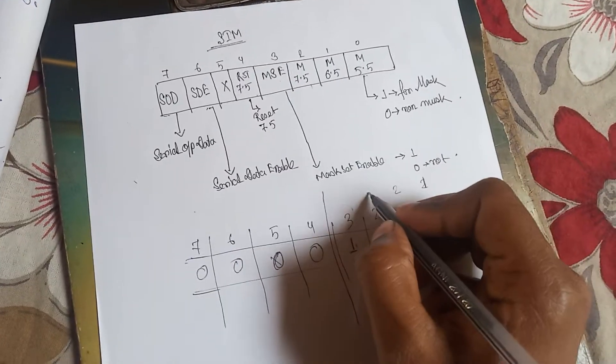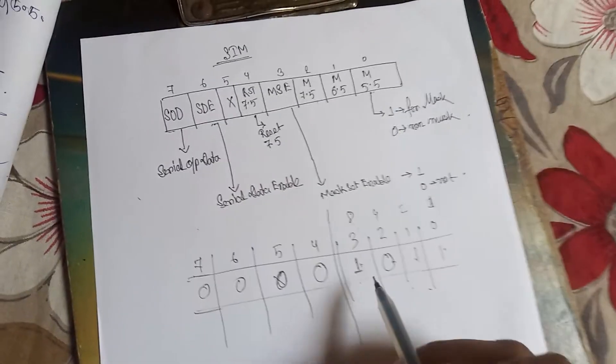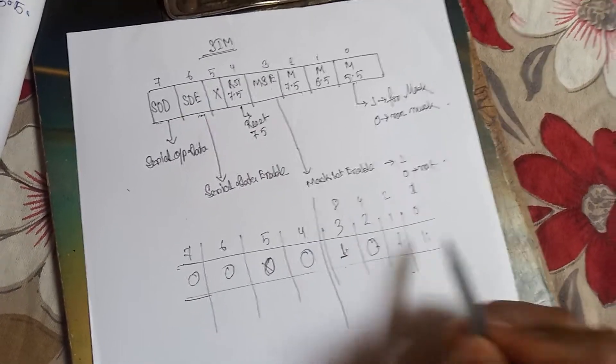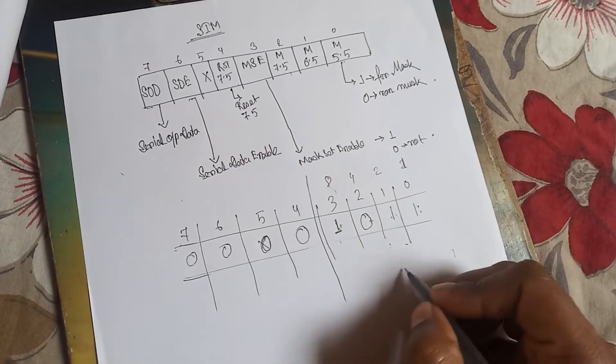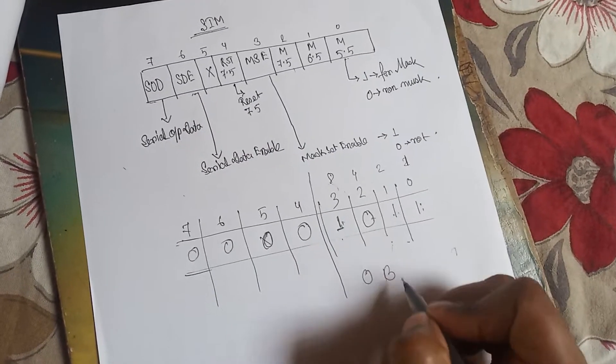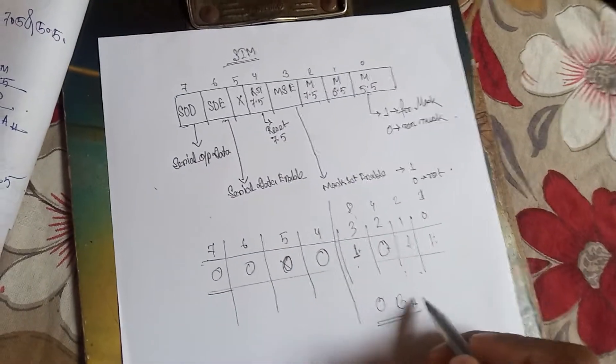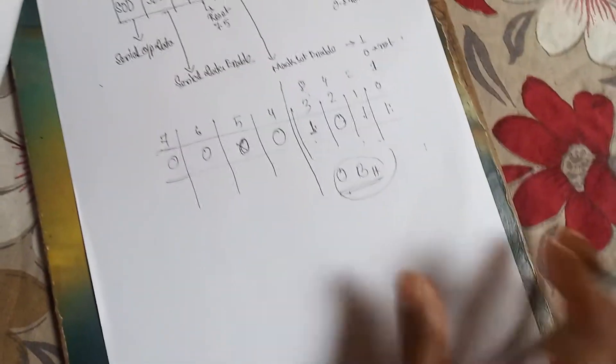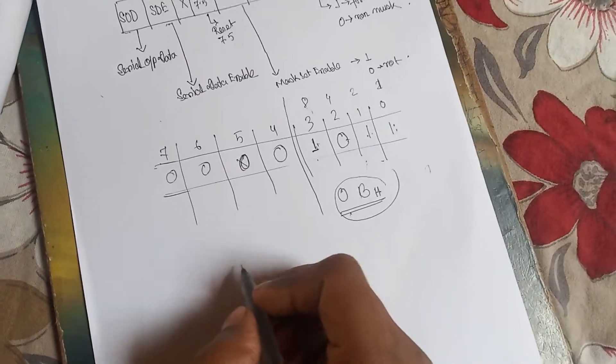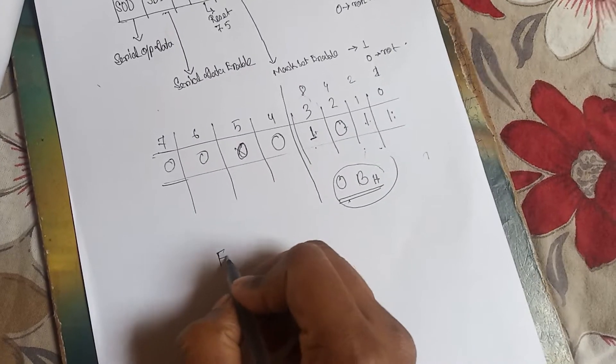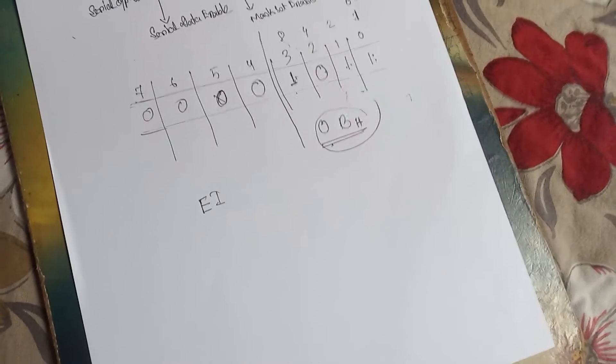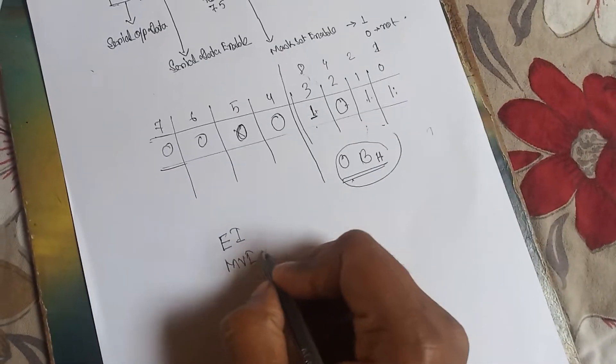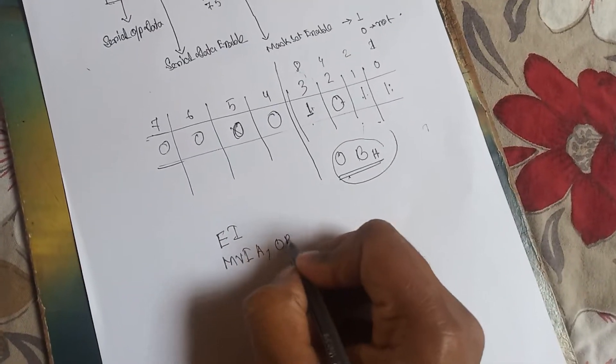Now take it 1 0 1 1. That's mean 1 0 1 1 means binary. 1, 2, 4, 8. 8 plus 2 plus 1, that's mean 11. 11 means B in hexadecimal. Here 0, so 0BH. So we have to fill the SIM register by 0BH. What are the programming instructions? Before starting interrupt, we have to write EI, interrupt enable. Then MVI A, comma 0BH.